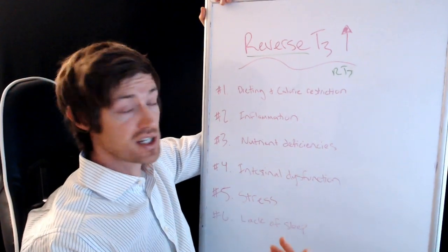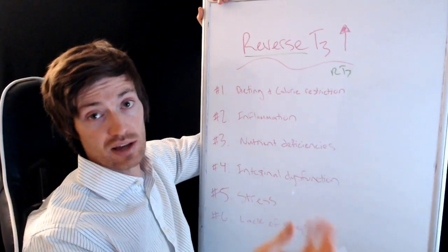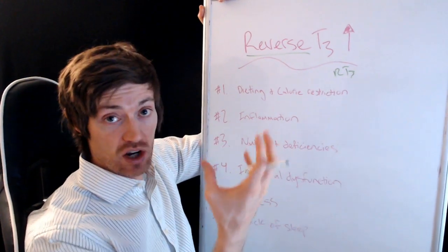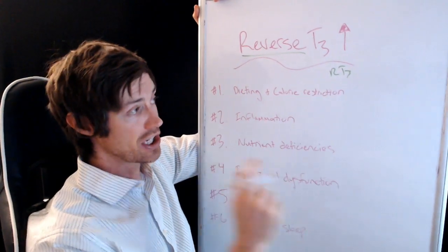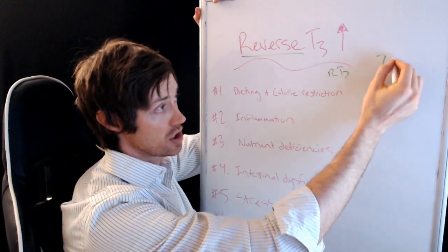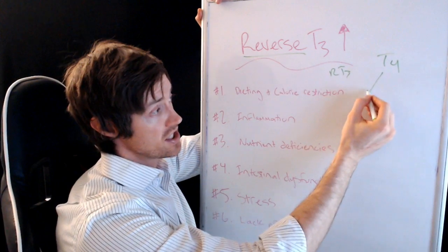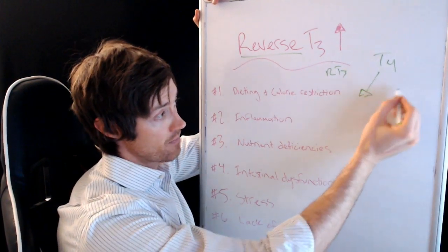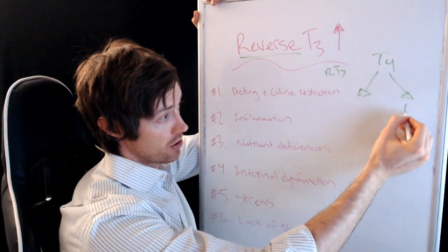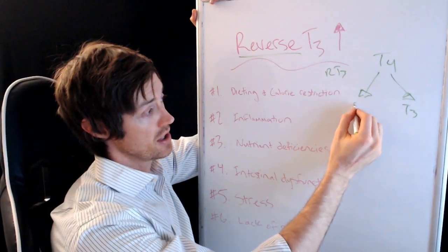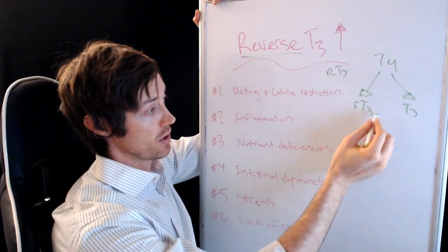Sometimes abbreviated RT3. So I just want to briefly introduce you to this and then we'll talk about what causes a high reverse T3 level. What you have in your body is a hormone called T4, and T4, in order to be activated, must be converted to something called T3. But it doesn't always do that. It also has the option of being converted to reverse T3, which is what we're talking about.